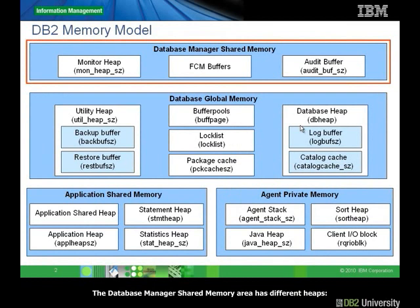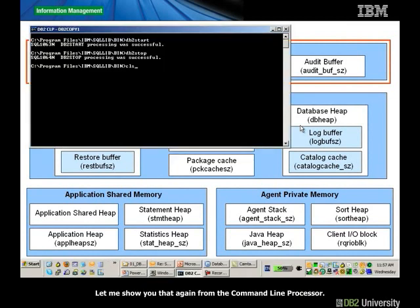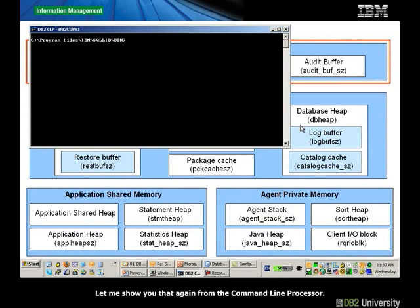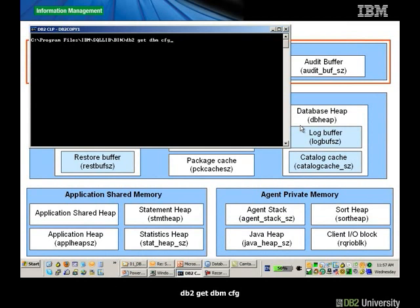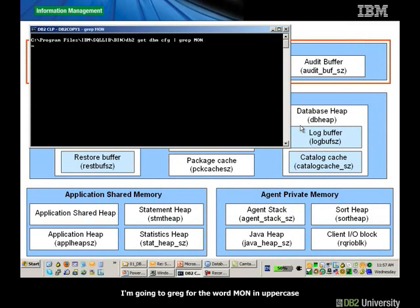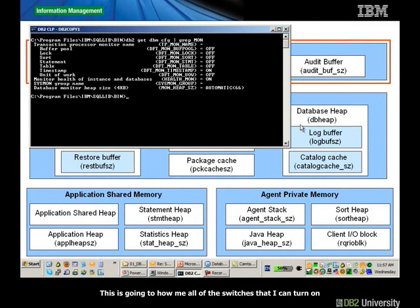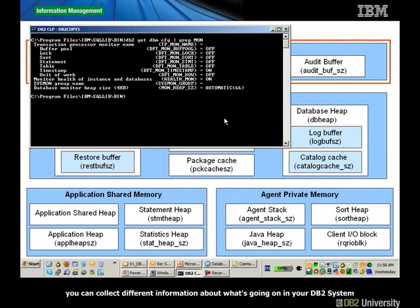The DatabaseManagerSharedMemory area has different heaps. The monitor heap is used when you turn on monitoring and take snapshots. To show how to turn on monitoring, from the command line processor, issue the command db2 get dbmcfg and filter for the word MON in uppercase. This will show all the different monitoring switches, and most of them are off by default. When some of these switches are turned on, you can collect different information about what's going on in your DB2 system, which can help you resolve locking issues, performance issues, and so on.